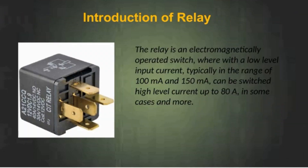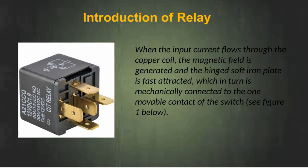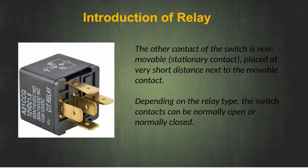Introduction of relay. The relay is an electromagnetically operated switch, where with a low-level input current, typically in the range of 100 milliampere to 150 milliampere, it can switch high-level current up to 80 ampere in some cases and more. When the input current flows through the copper coil, the magnetic field is generated and the hinged soft iron plate is attracted, which in turn is mechanically connected to the movable contact of the switch. The other contact of the switch is non-movable, placed at a very short distance next to the movable contact.